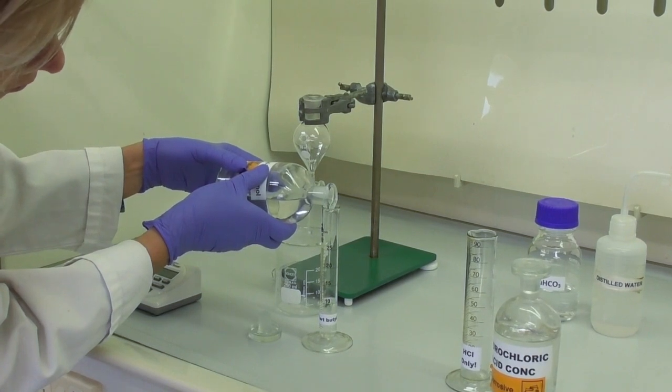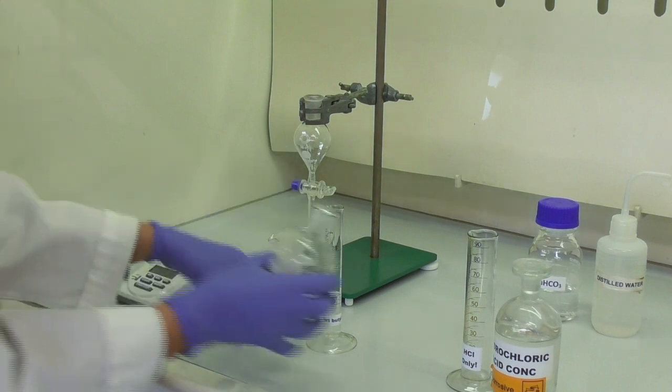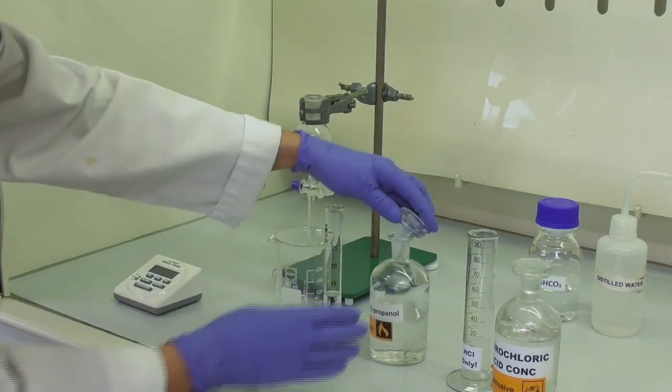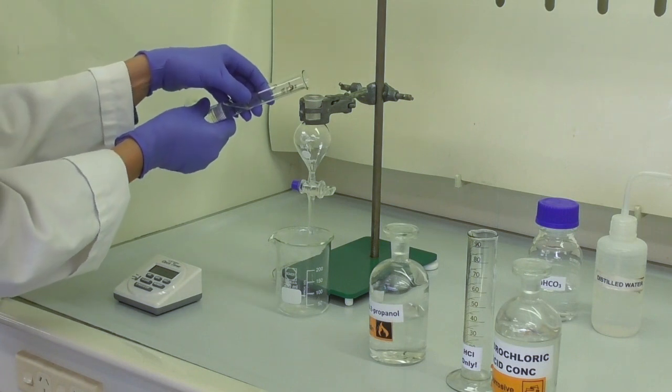We measure out 12 ml of 2-methyl-2-propanol, also called tertiary butyl alcohol, and pour this into the separating funnel.